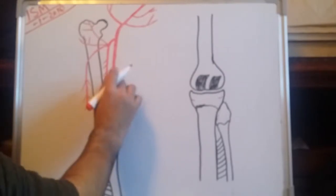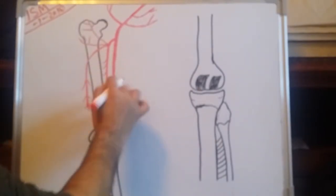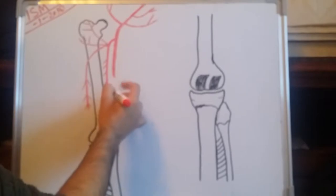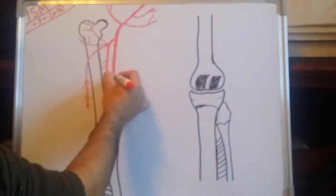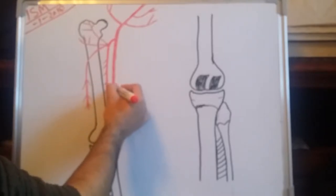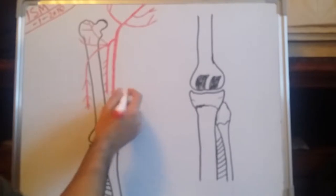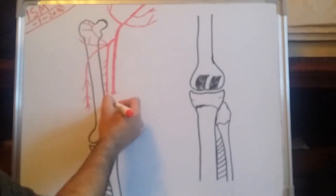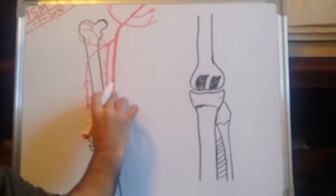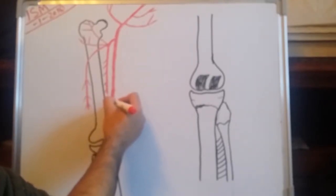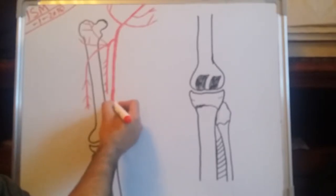After this, the femoral artery enters into the adductor hiatus and moves to the back side of the bone. I have made dotted lines to show it moving slightly downward and to the back side of the bone.